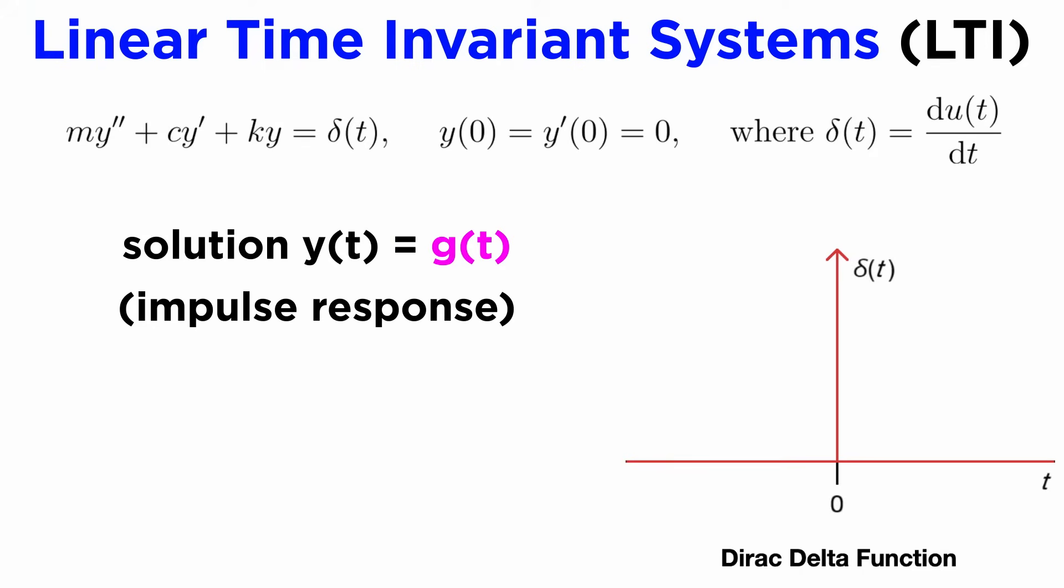Next, the impulse response is the output we get if we use the Dirac delta function as the input. The Dirac delta function is a slightly strange function that is zero for all time except at t equals zero, where it instantaneously spikes up to infinity. In our example, this is like delivering a sudden change in momentum, or impulse, to our system at t equals zero, and then applying nothing else, and is similar to having non-zero initial conditions. We use the symbol g(t) to denote the impulse response.